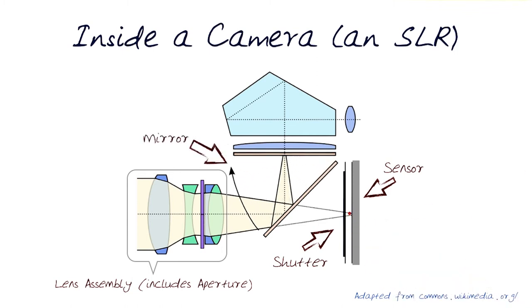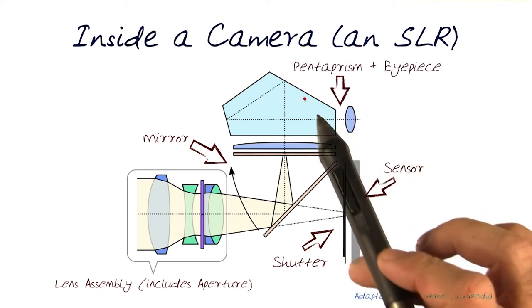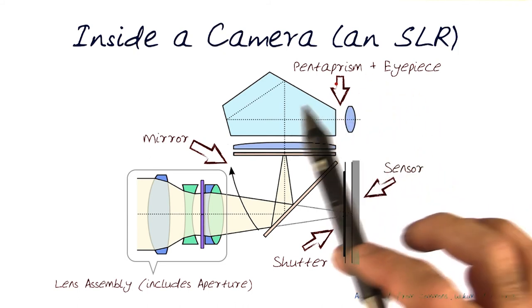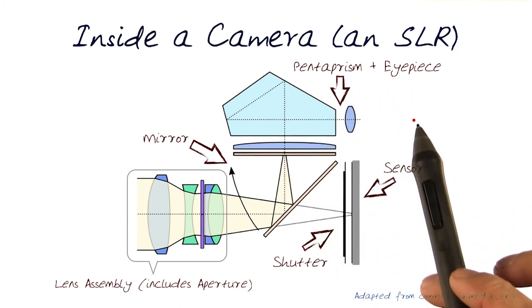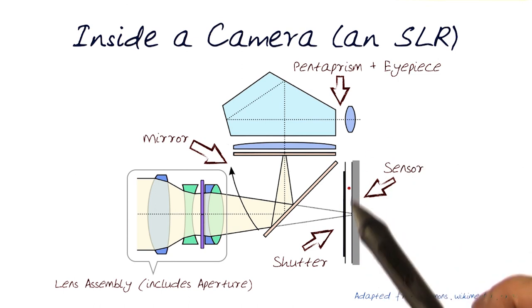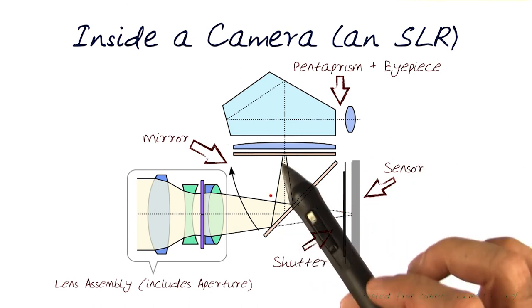Here you see the example of the mirror going up. When the mirror moves up, all the light goes and hits the sensor. And above is where the whole eyepiece pentaprism is to make sure that we can see exactly what's actually going to hit the sensor after the mirror moves up.